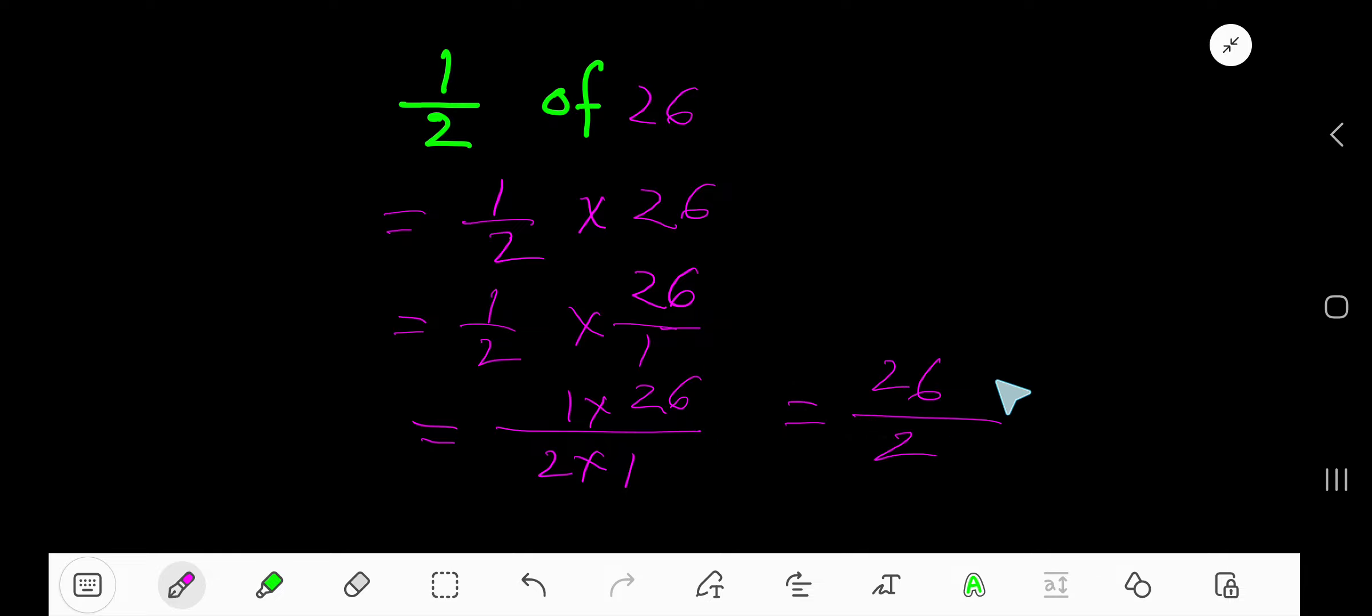2 times 1, 2. Now reduce this fraction. 26 equals 13 times 2. So 2 and 13 are the factors of 26.